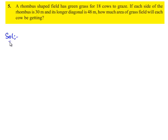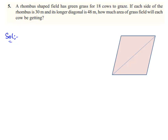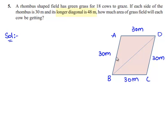We shall first consider a rhombus shaped field. We shall name the rhombus as A, B, C and D. As given in the question, each side of the rhombus is 30 meters and let BD be its longer diagonal with length 48 meters.